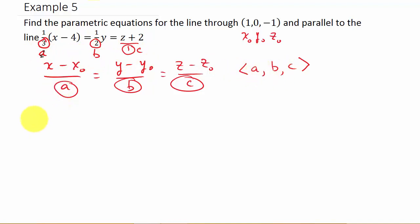All right, so our direction vector, we'll call that v. That's 3, 2, 1. There's our a, b, and c. So here we go.